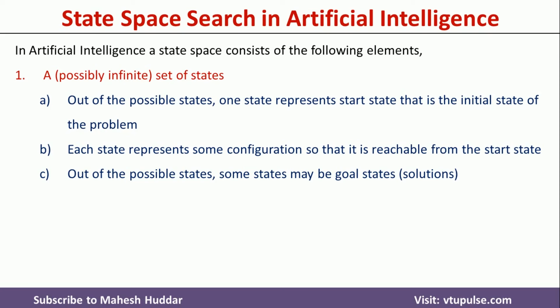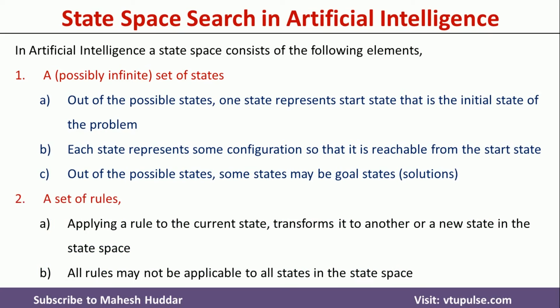The second element is a set of rules. After applying a rule to the current state, the current state will be transformed to another, or you can say that a new state in the state space. These rules may not be applicable to all states — some rules are applicable to some states, some rules are applicable to other states.